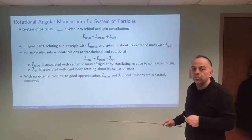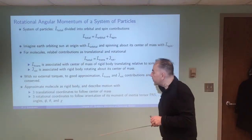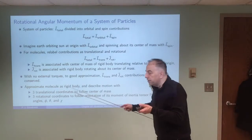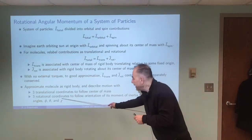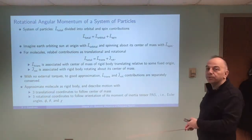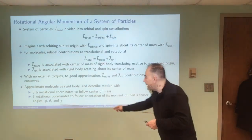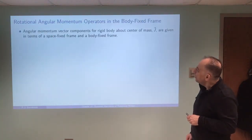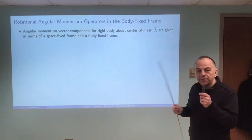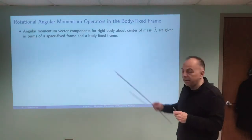In this chapter, we're going to approximate the molecule as a rigid body and describe its motion with three translational coordinates to follow the center of mass, and then three rotational coordinates to follow the orientation of the moment of inertia tensor principal axis system. That means we're going to need the Euler angles phi, theta, and chi. The angular momentum vector components for the rigid body about the center of mass system are going to be given in terms of the space-fixed frame and the body-fixed frame.